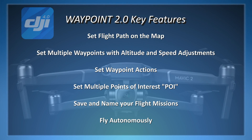Before we plan a flying mission, let's review some of the key features. You can set your flight path on the map with the drone turned on, either on the ground or in the air. Set waypoints to direct where the drone will fly, including setting the altitude and speed at each waypoint. Set waypoint actions to start and stop video recording or take a photo at each waypoint. Set points of interest which determine your camera direction at each waypoint. Save and name your missions and fly autonomously, completing the entire mission even when disconnected from your remote controller.